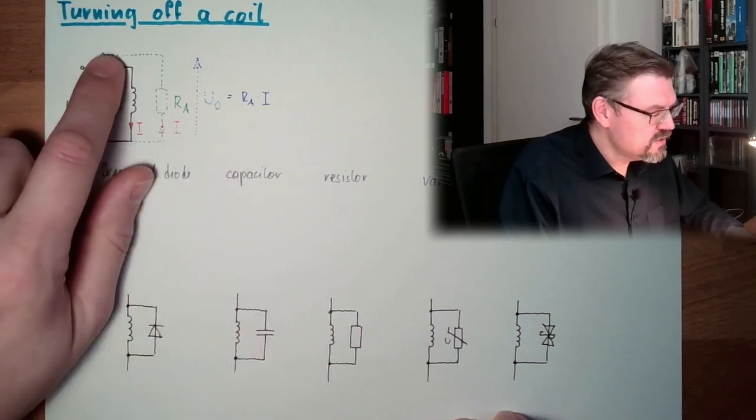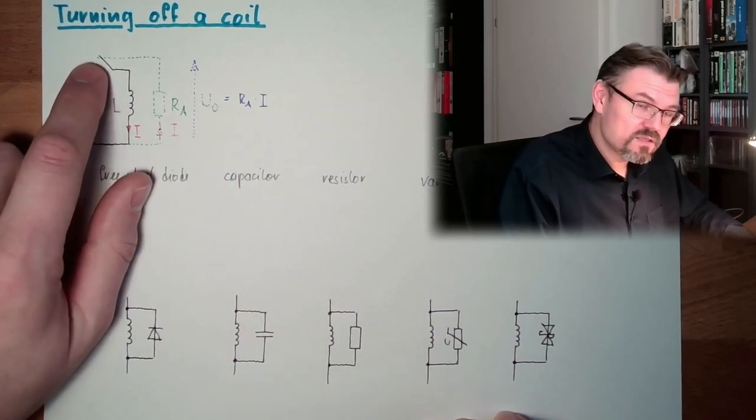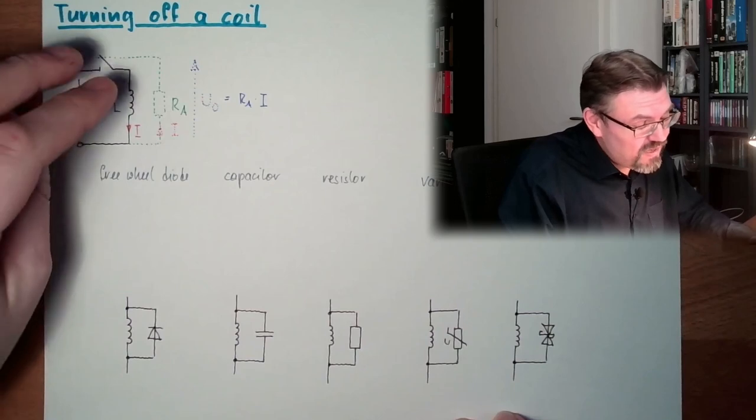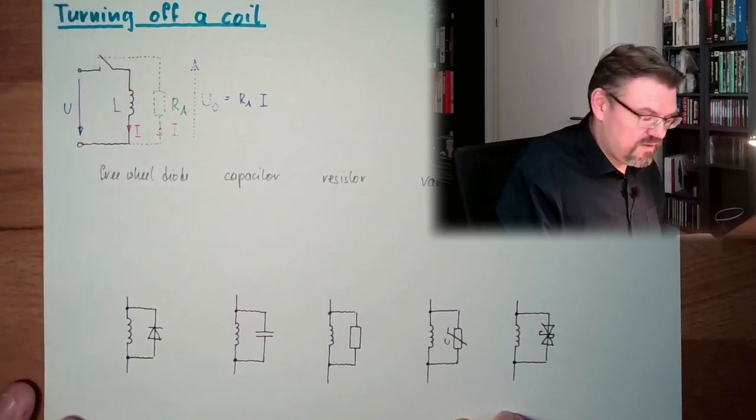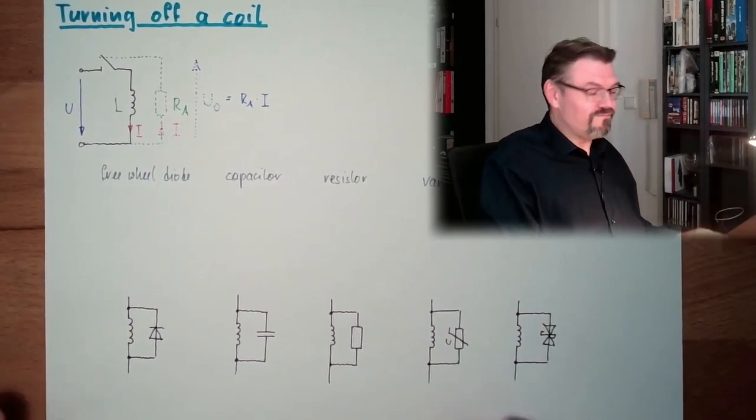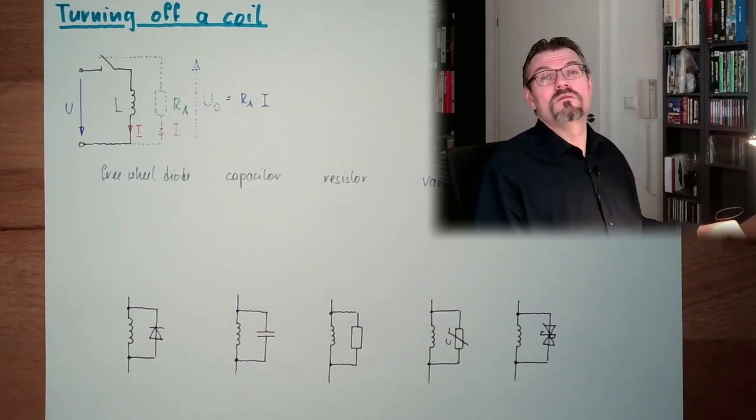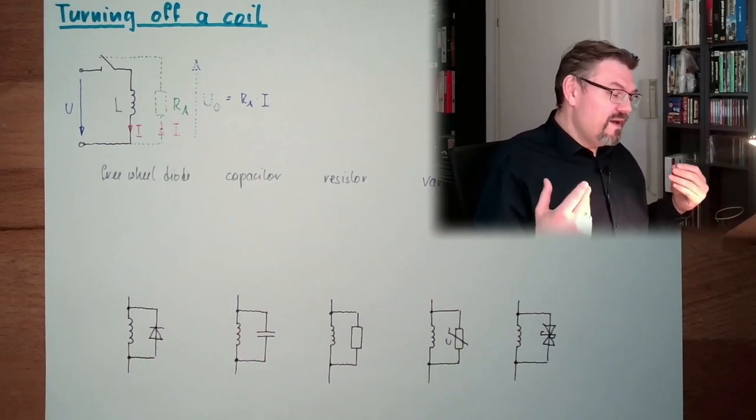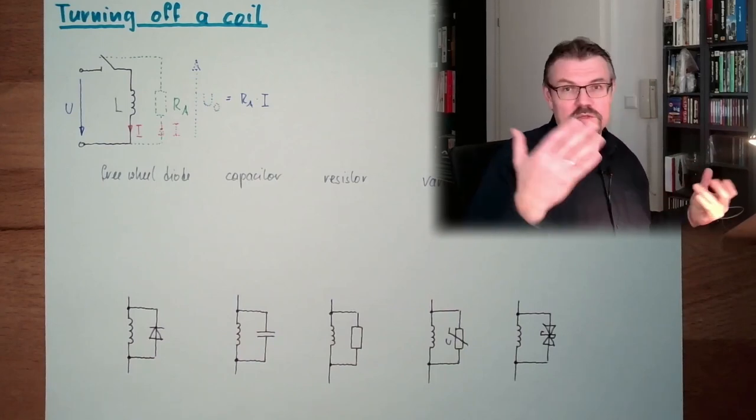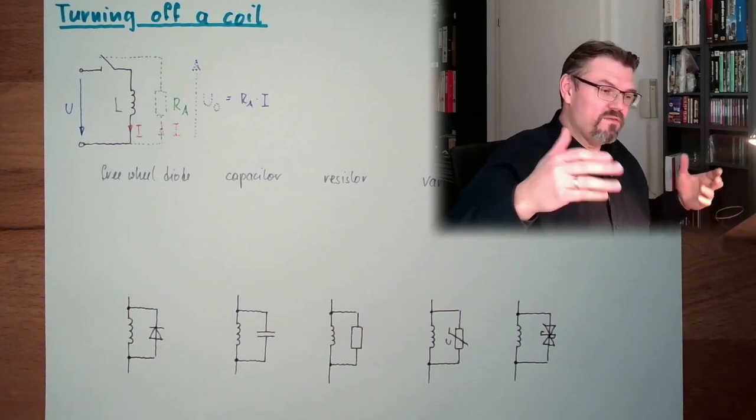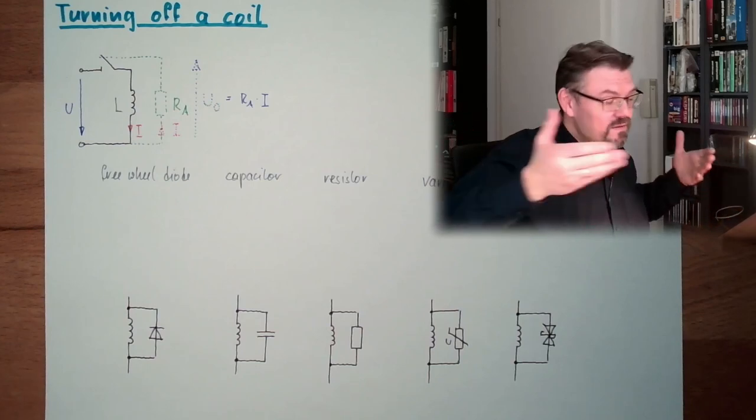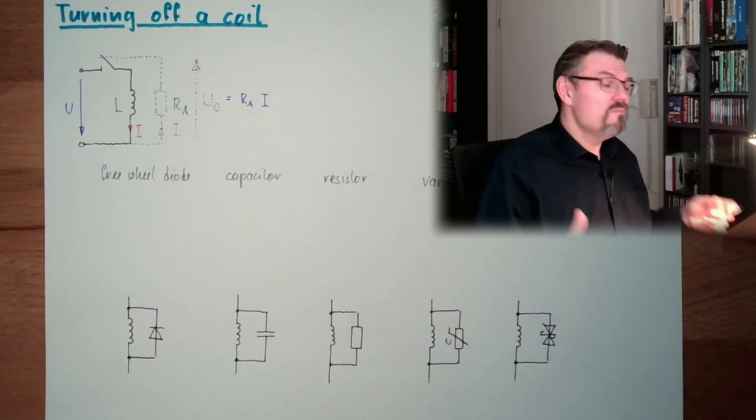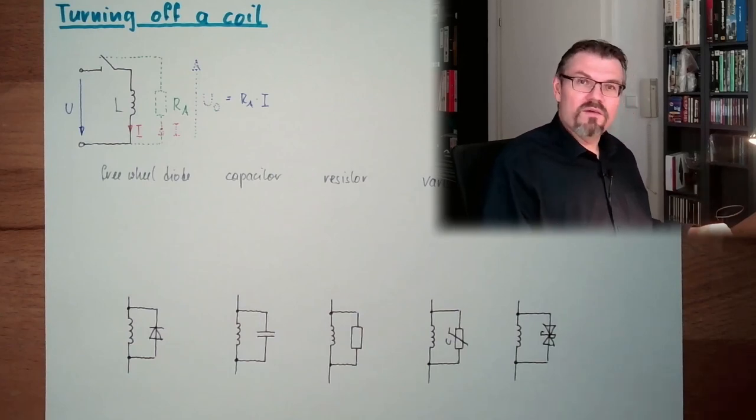So usually, here are sparks, and these sparks will destroy the contacts and so on. Not that good. So we have, sometimes it's used. I said, like, if you want to have a spark, then this stuff can be used, yeah? But usually, we don't want to have this, yeah?